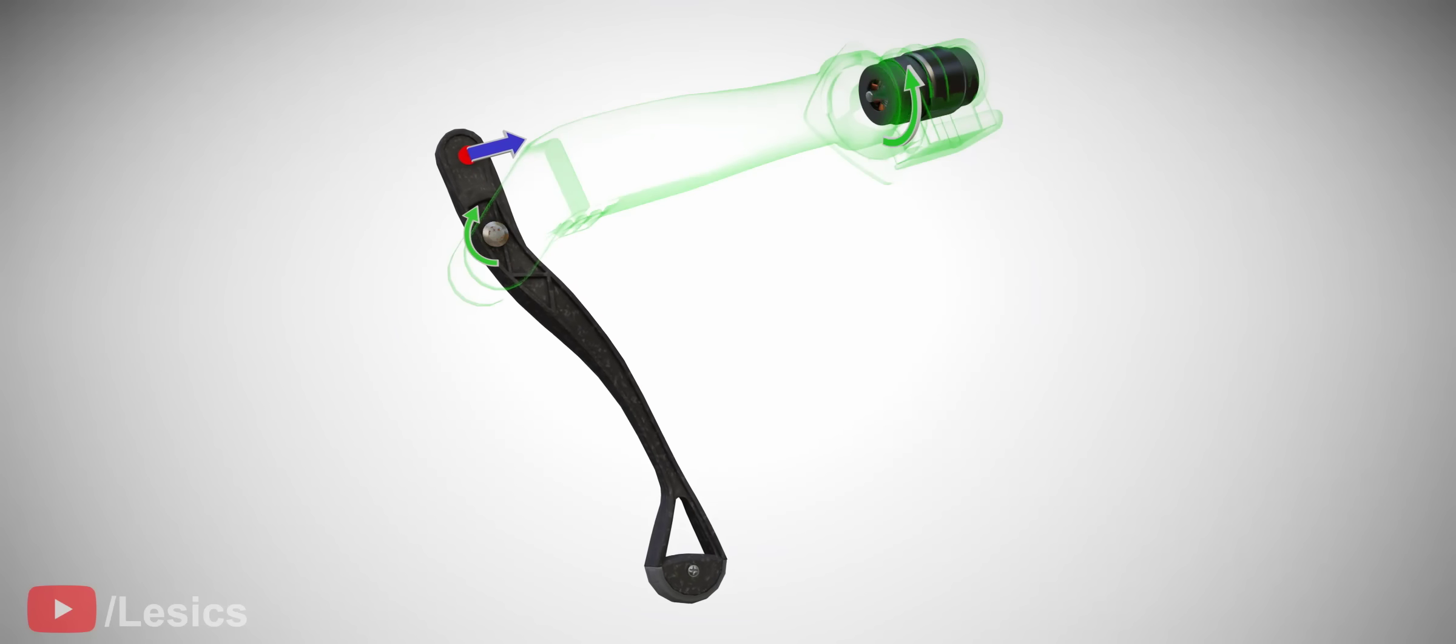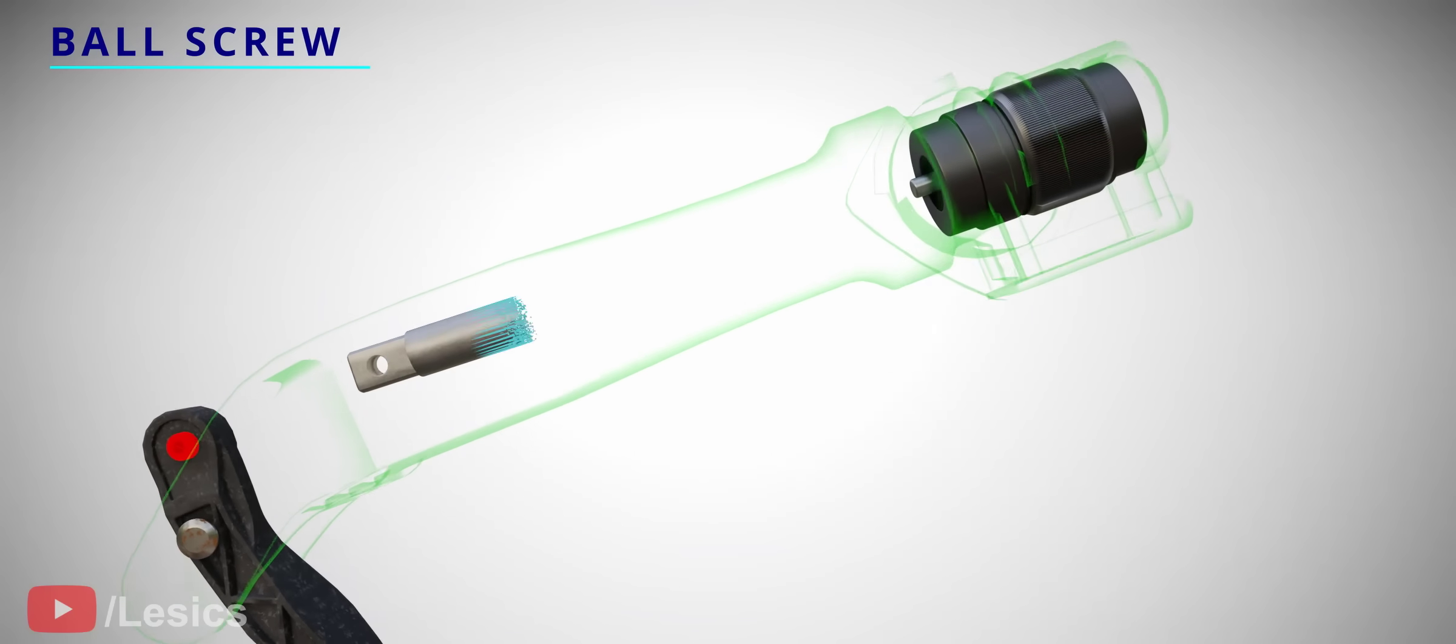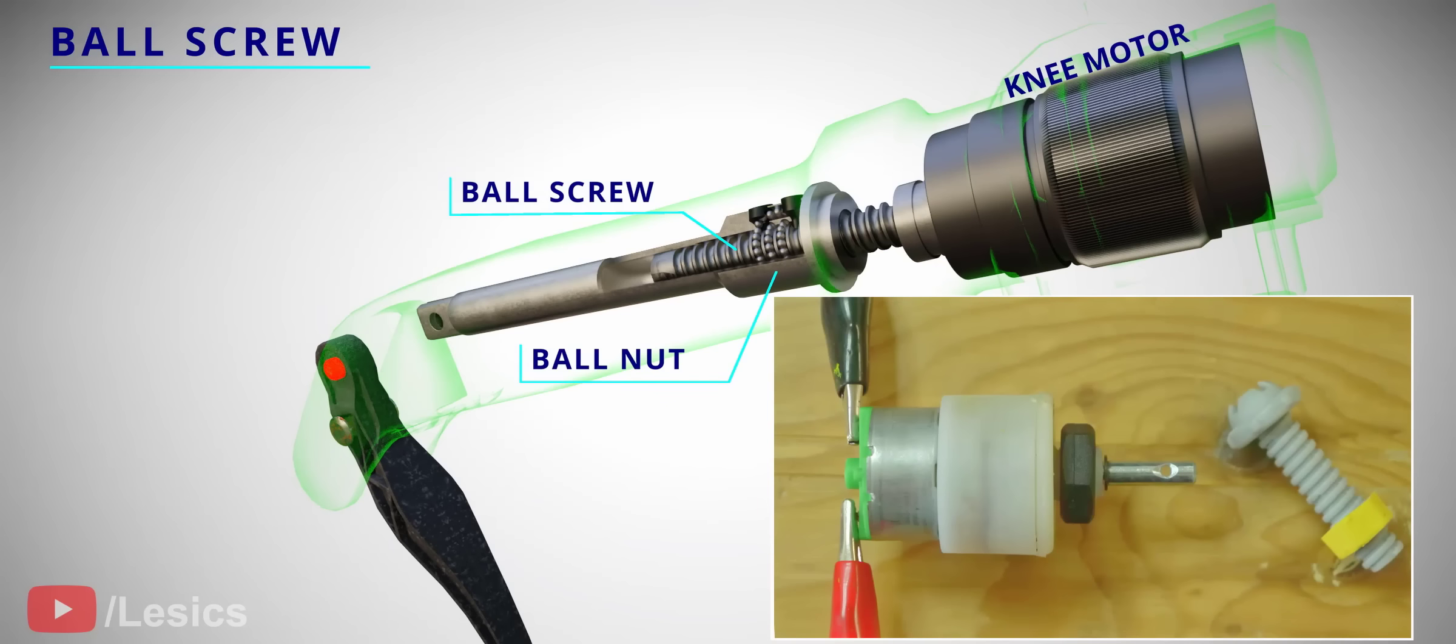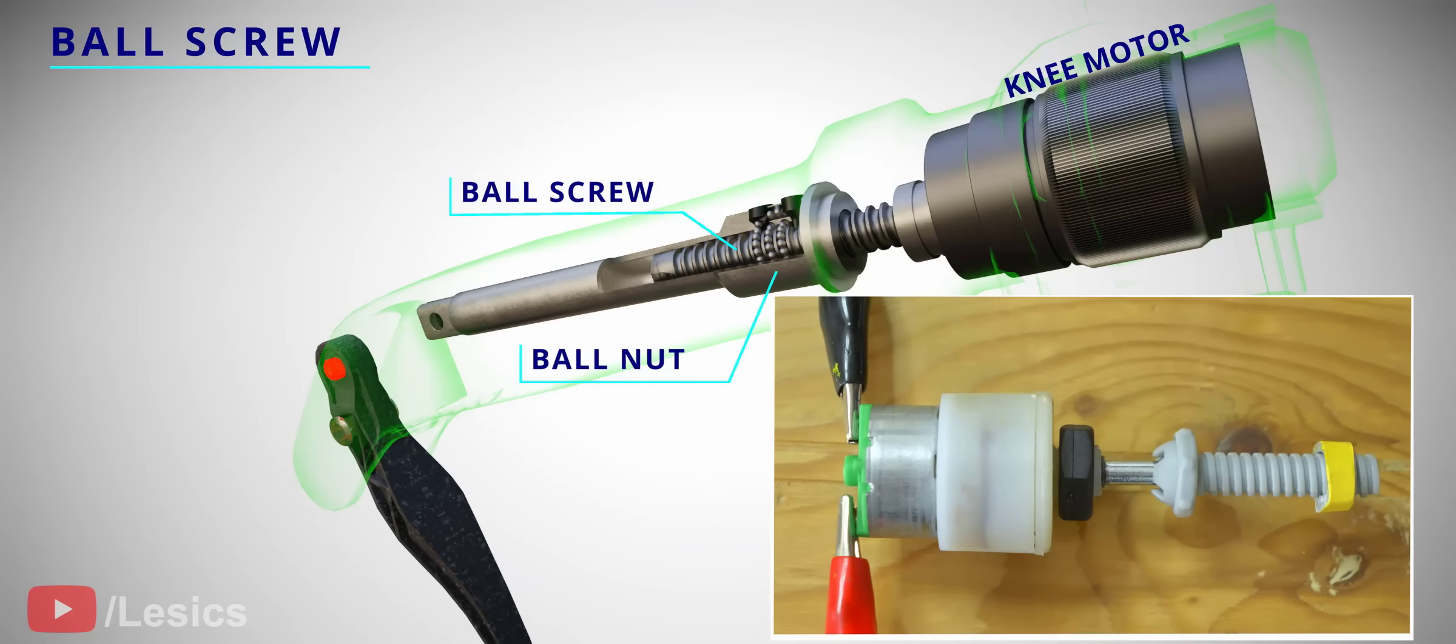The best way to produce linear motion from a motor is a ball screw mechanism. For a clear understanding, let's consider this bolt which is directly connected with a motor. When the motor rotates, the nut and bolt rotate together as a single piece. There is no linear motion here.